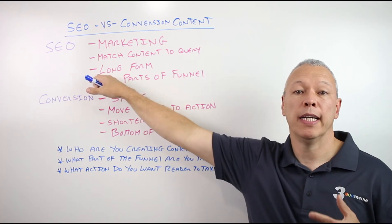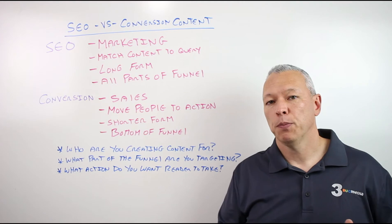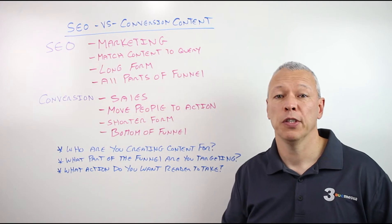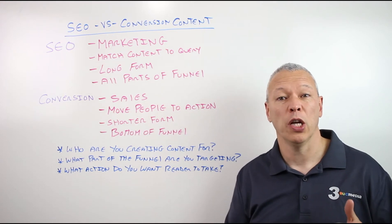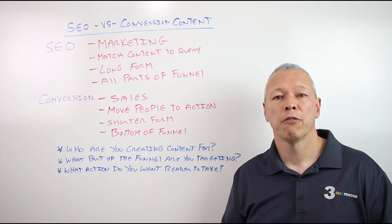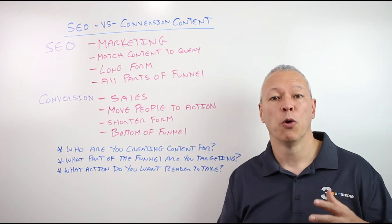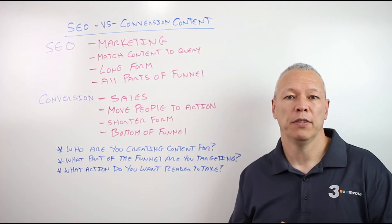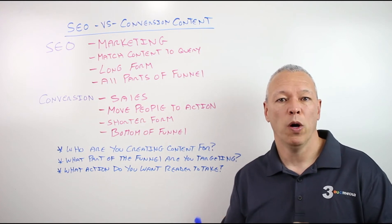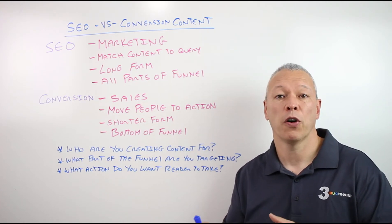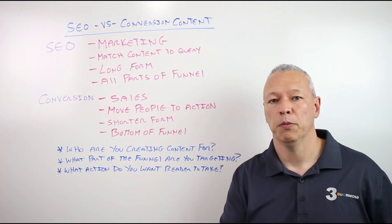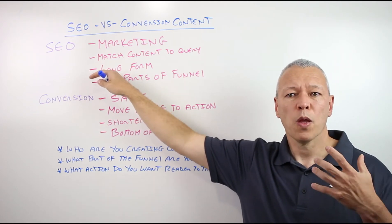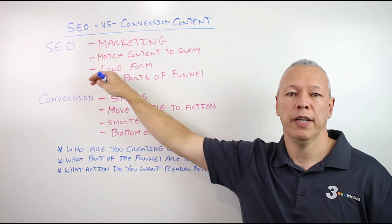SEO based content typically is longer form content. If you look at the first page of Google search results for almost any query, you'll usually find that the content is over a thousand words. The reason for that is the longer the content is, the more keywords you can put in there, the more topics you can cover, and the more content there is for Google to grasp onto and figure out what that page is about — and whether it's authoritative compared to similar pages. Usually when it comes to SEO, the longer the better, as long as you have a clear strategy.